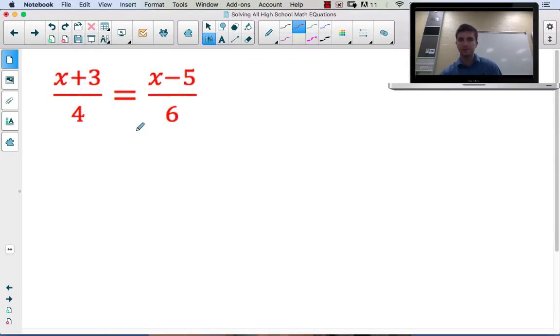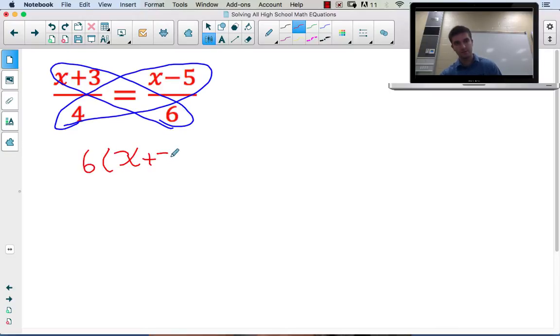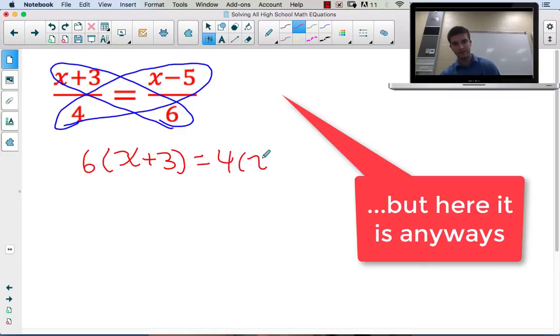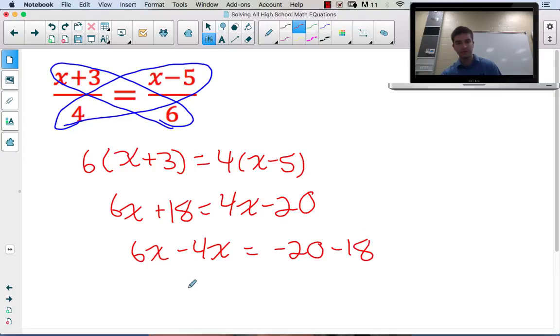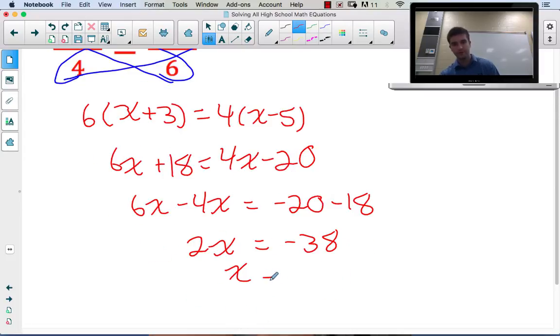This is a type of equation where cross-multiplication is allowed, when we have fraction equals fraction. Denominator of one side multiplied by the numerator of the other gives 6(x - 5) = 4(2x + 9). Distribute to get 6x - 30 = 8x + 36. Get all variable terms on one side: 6x - 8x on the left, -30 - 36 on the right. We get -2x = -66, so x = -19.